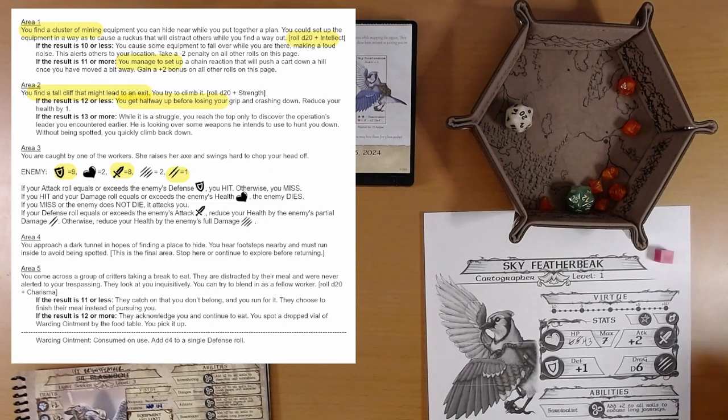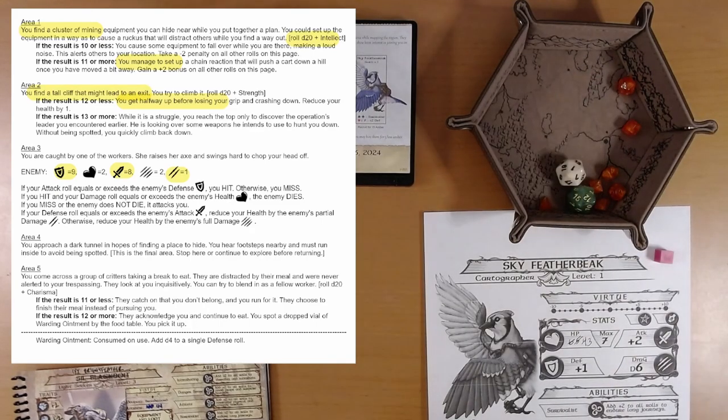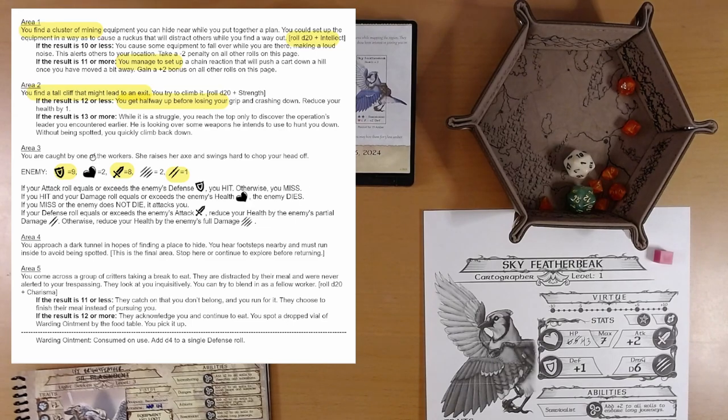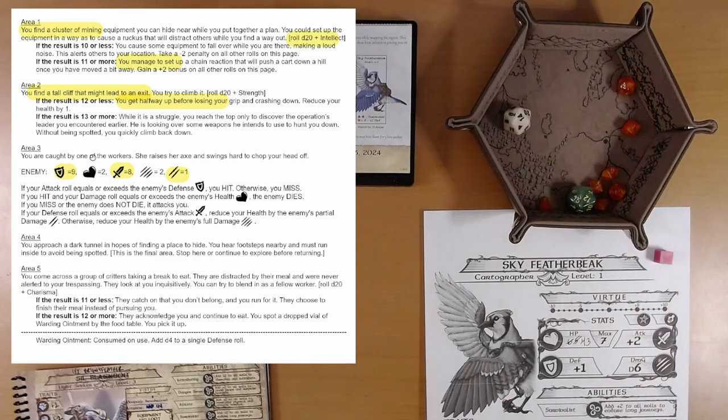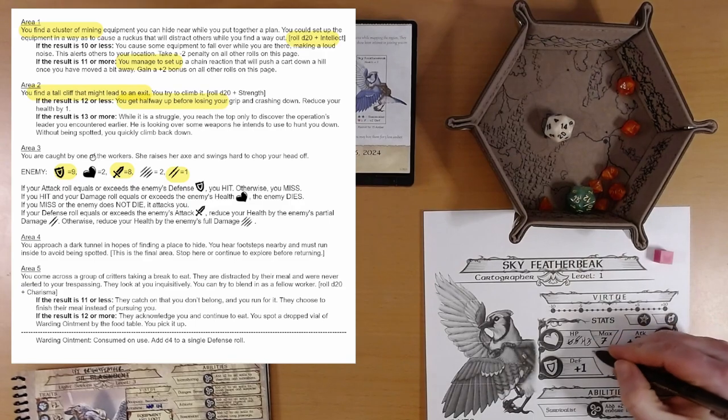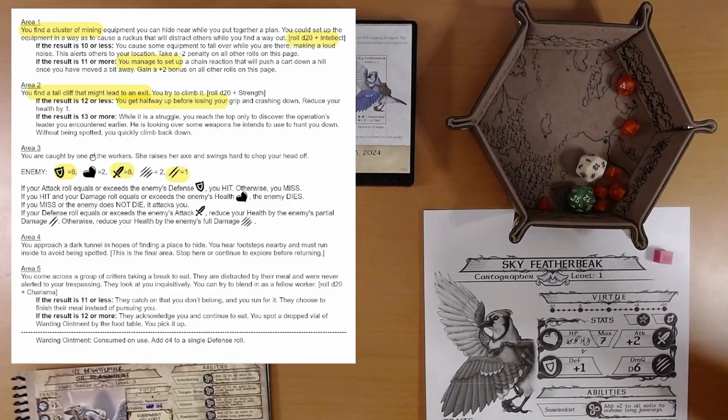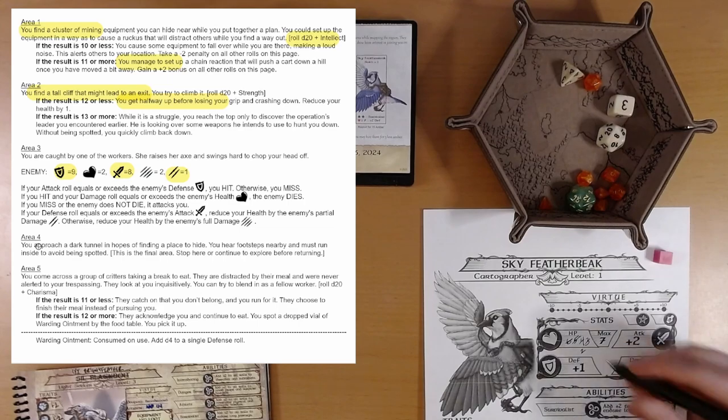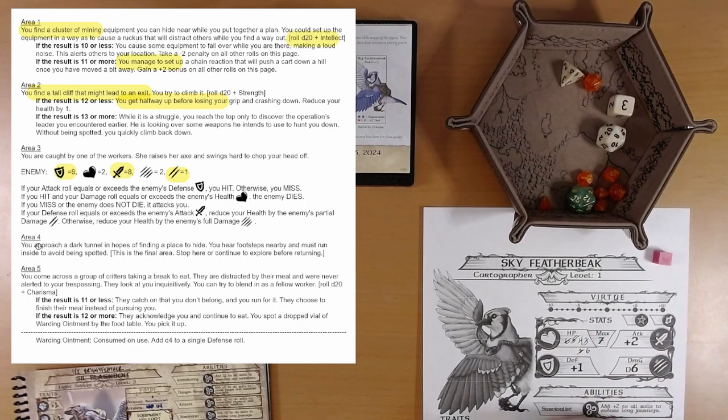Twenty. Excellent. That gives us a boon. We now have a boon. You may use this boon to add a d4 on a future d20 roll. We successfully defend. We take one point of damage though. Partial damage. We're down to three. We should probably use this health potion. We can't use it in combat, but we can use it maybe before we go to the next area. I'm gonna assume we're supposed to keep fighting this until we kill it. We need to hit this fella. Thirteen. There we go. We hit him. Three. We killed him. We killed the worker. We are hurting. Let's use that health potion. That's gonna add a d4. Hoping for a four. Yes. Four. So we're up to six.